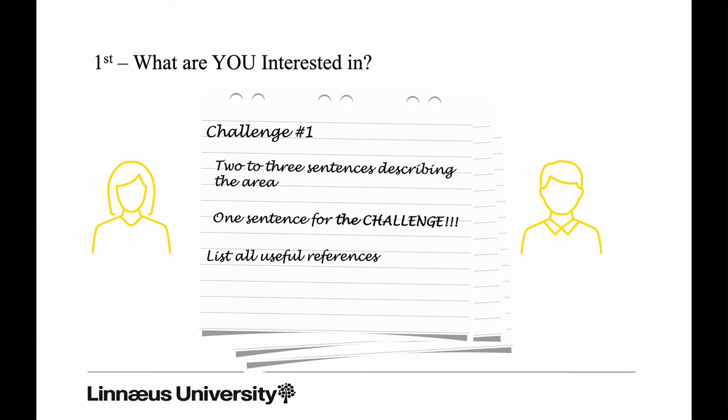Process this using paper and pen or a notebook on your computer. Write down two or three sentences describing the area first — for example, network security or the sub-area you're interested in, or deep learning, or API design, or whatever area you pick. Then try to phrase your challenge as a single sentence. If your challenge requires more than one sentence, it's too complex — divide it or focus it even more. And don't forget to start collecting references you've used in your search.